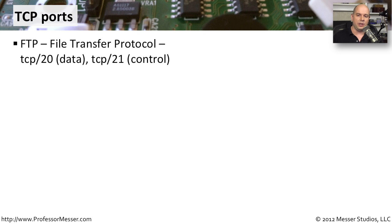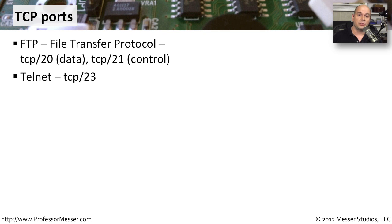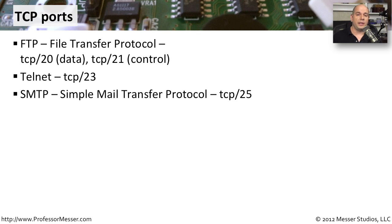One of the first TCP port numbers you need to know is for File Transfer Protocol, or FTP. FTP uses two separate TCP ports: TCP port 20 is used to send data, and TCP port 21 is the control channel between the two devices. If you're working at a console remotely connected over Telnet, you're communicating over TCP, usually using port 23. Mail servers on the internet constantly transfer mail using SMTP — Simple Mail Transfer Protocol — which almost always uses TCP port 25.